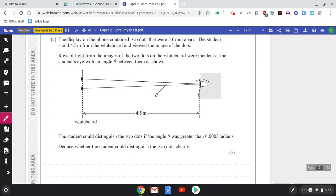Can the student resolve them? Can they see these two dots as being separate, or are they too far away? Do the two dots look like a single dot projected onto the whiteboard? That's what we're after here. So that's called resolving. Anyway, where do we start?